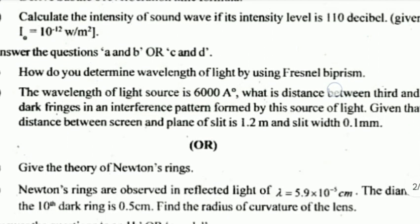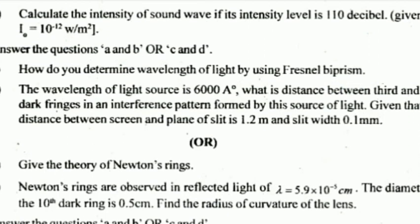C) Give the theory of Newton's rings. D) Newton's rings are observed in reflected light of wavelength λ = 5.9 × 10⁻⁹ m. Find the radius of curvature of the lens. (4 marks)